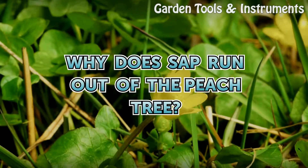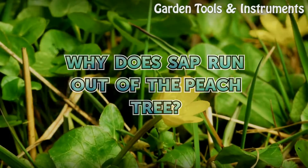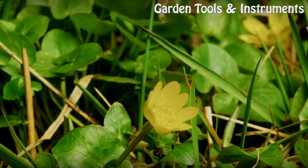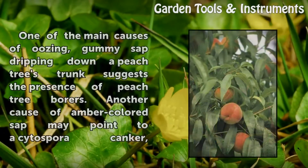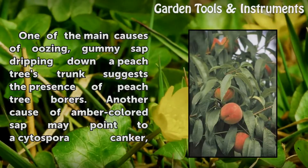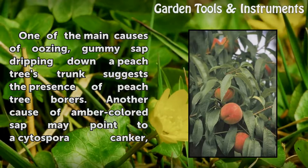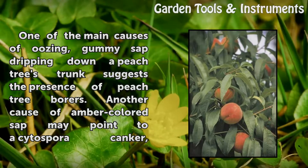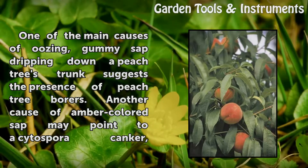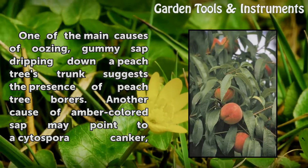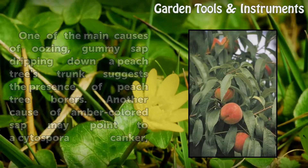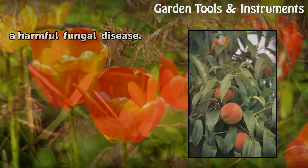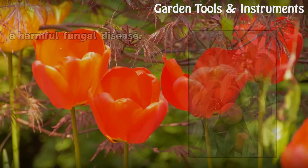Why does sap run out of the peach tree? One of the main causes of oozing, gummy sap dripping down a peach tree's trunk suggests the presence of peach tree borers. Another cause of amber-colored sap may point to a Cytospora canker, a harmful fungal disease.